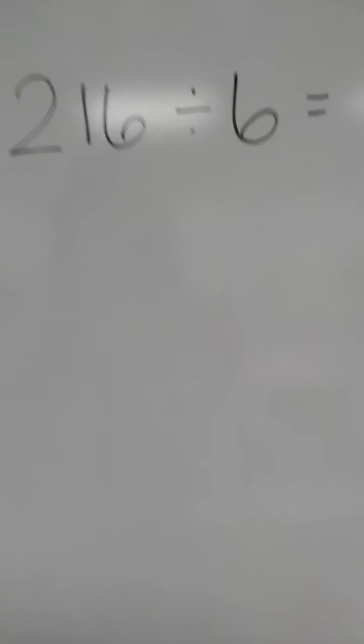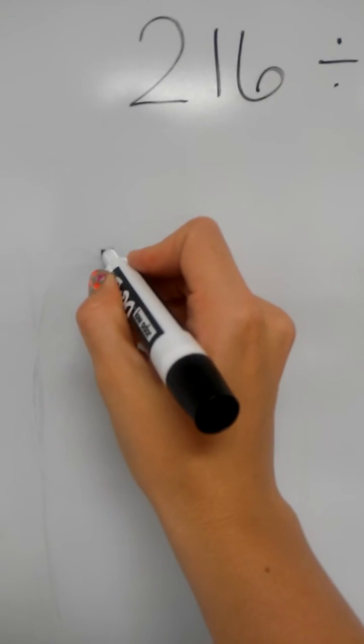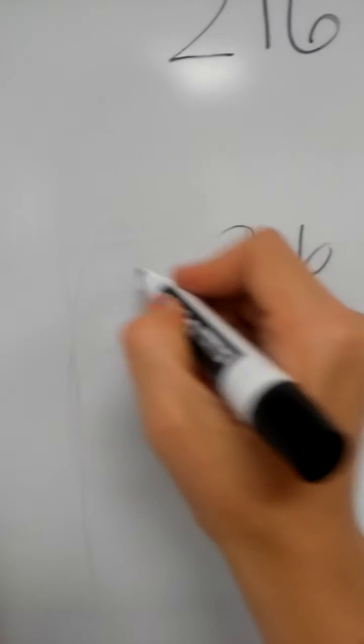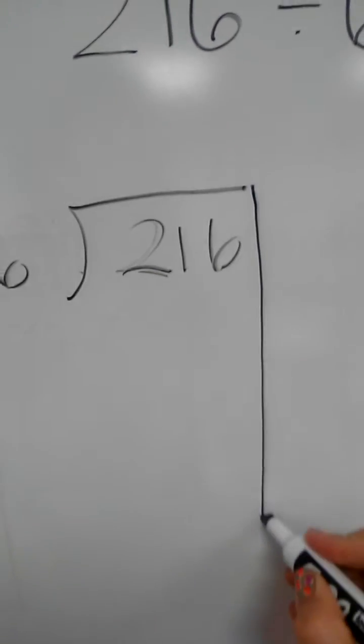So 216 divided by 6. To solve it with partial quotients we're going to write our problem down like we're solving it the traditional way, 216 divided by 6, and then we're going to draw a line down the side.